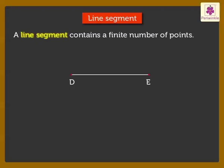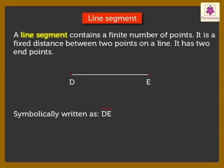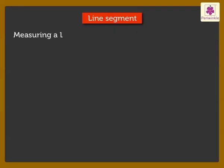Line segment. A line segment contains a finite number of points. It is a fixed distance between two points on a line. It has two end points. Here DE is a line segment, it is written as DE or ED.